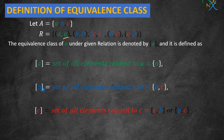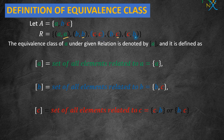The equivalence class of element b — what will it be? It is the set of all elements related to b. Checking the given relation, we find the elements related to b. We separate them with commas and place them within curly braces to form a set. So this is the equivalence class of b.